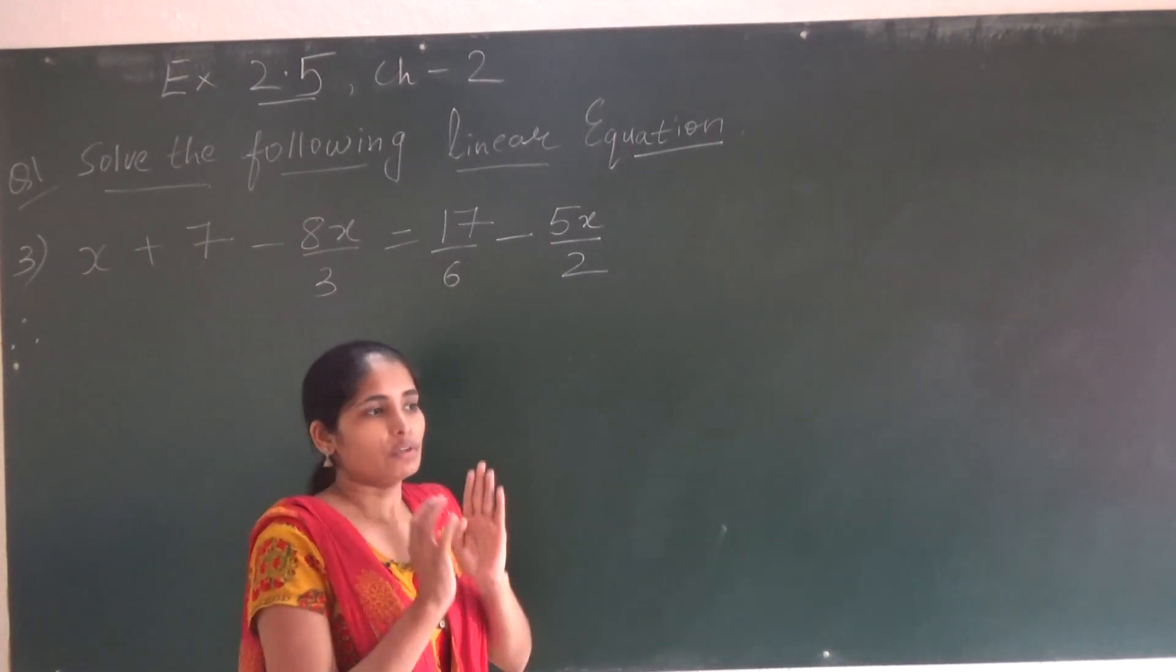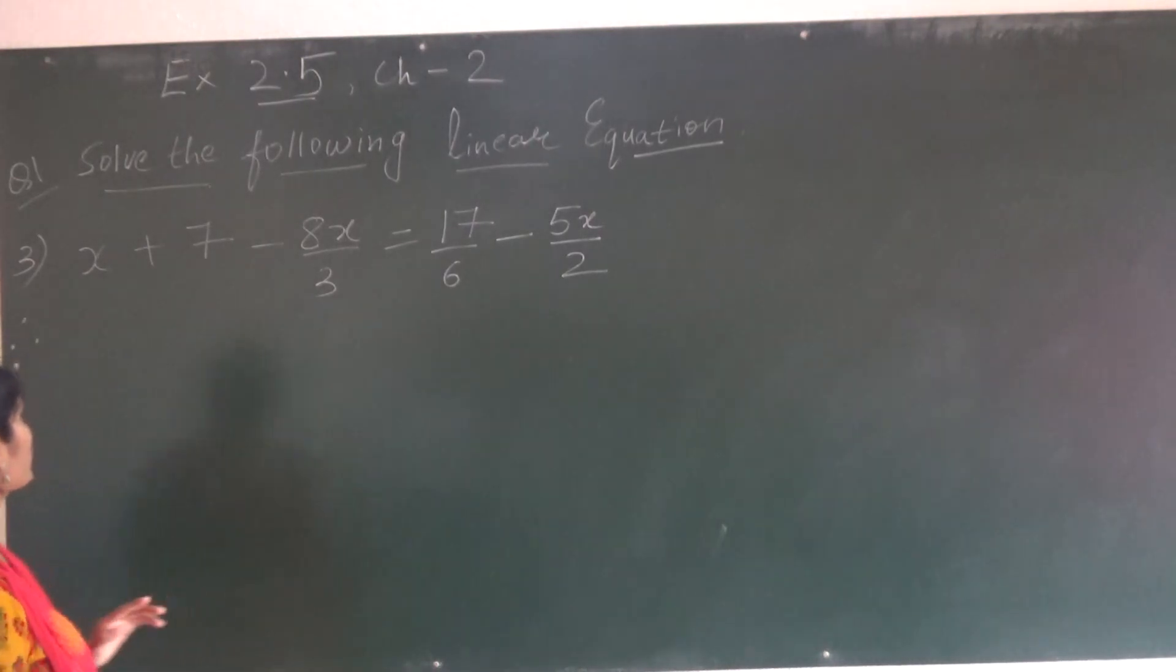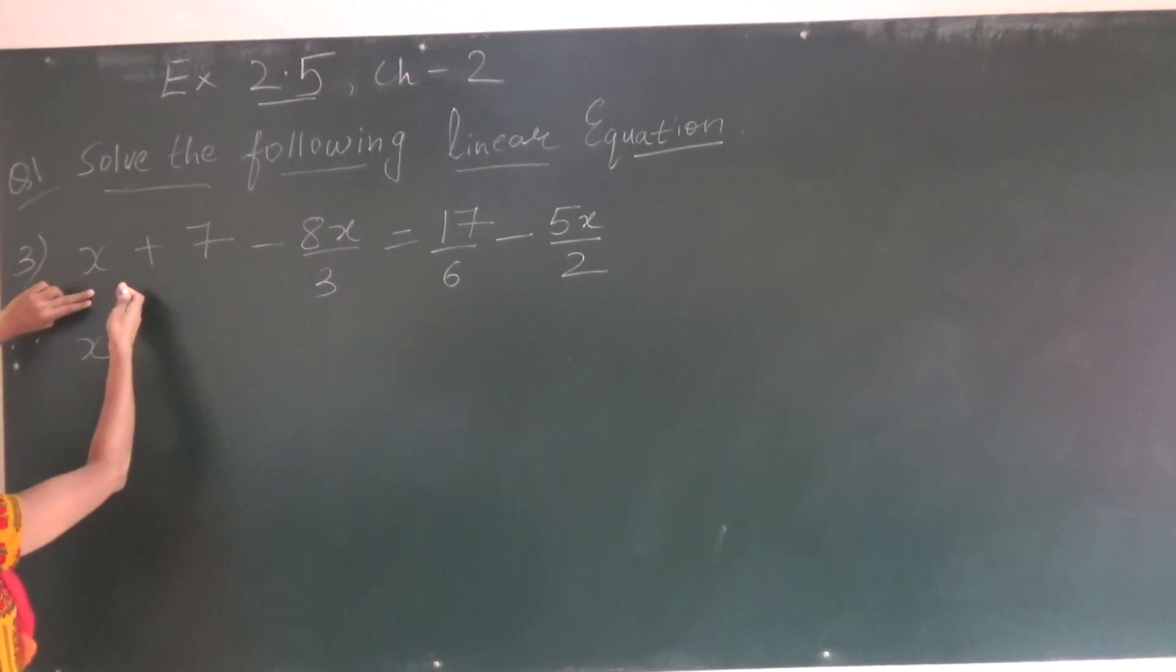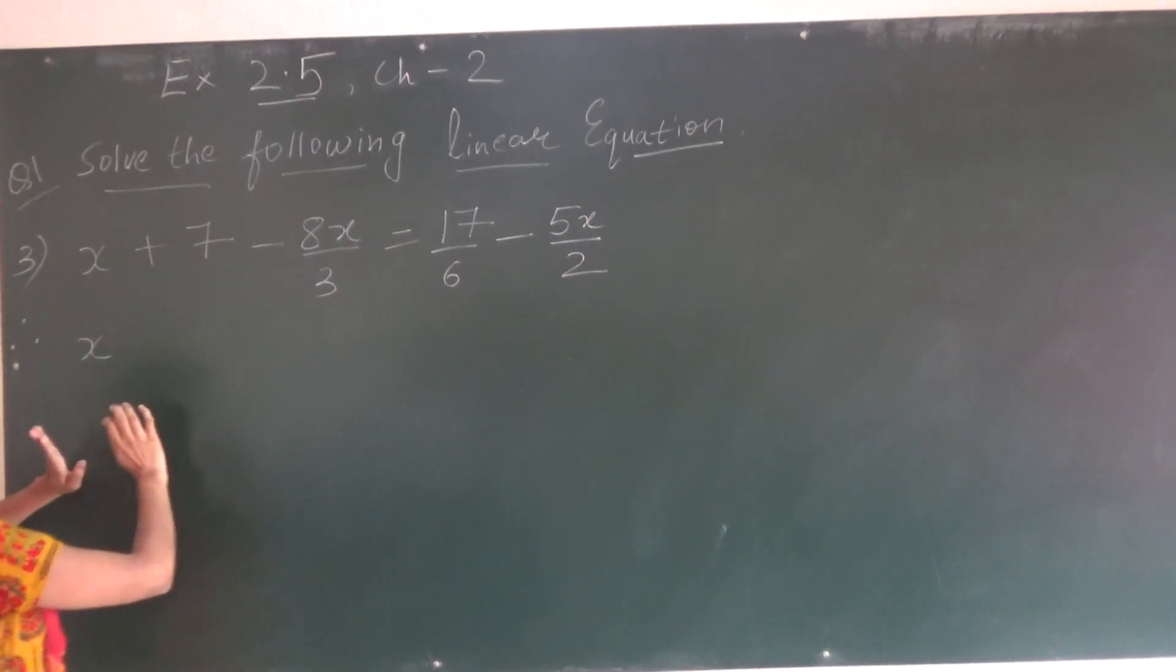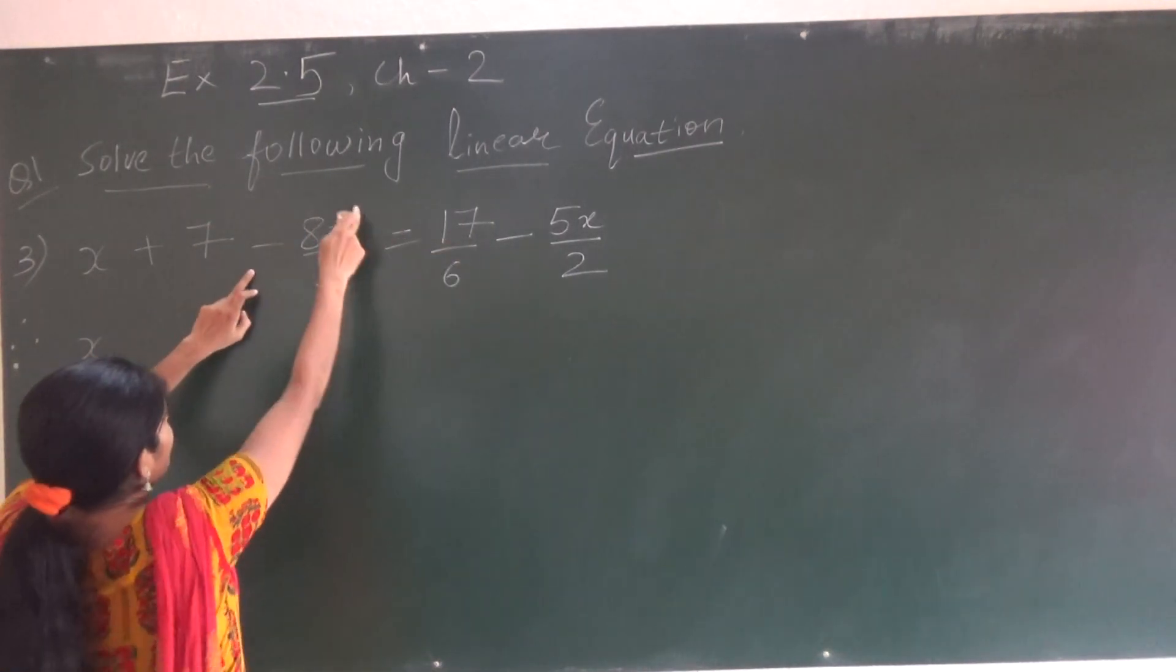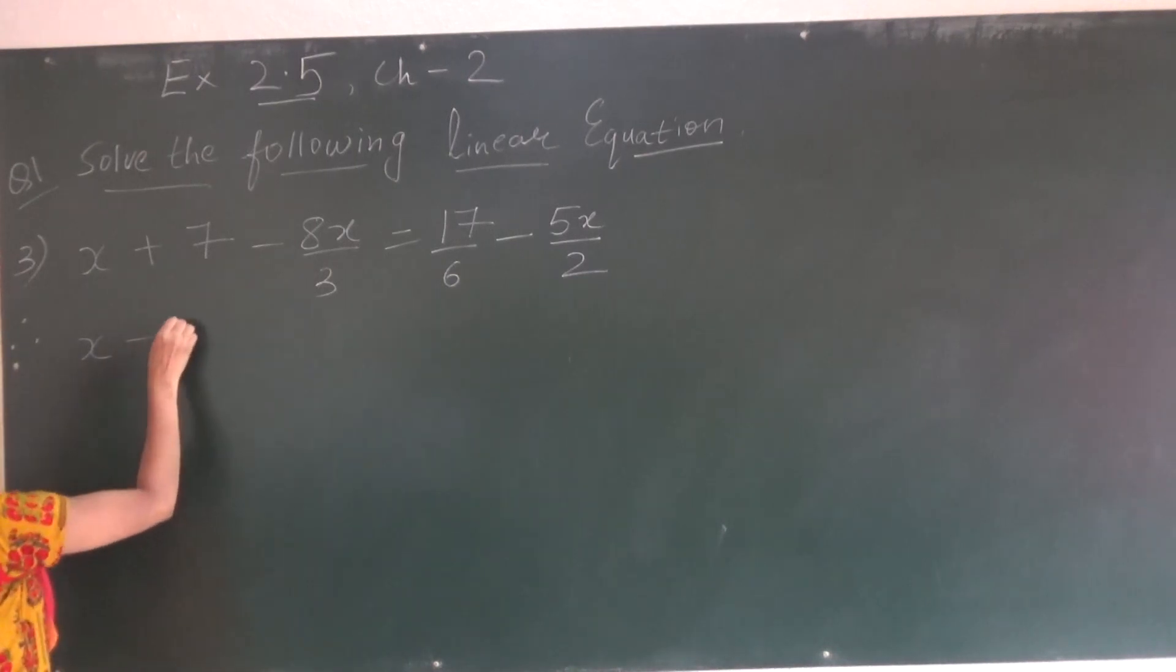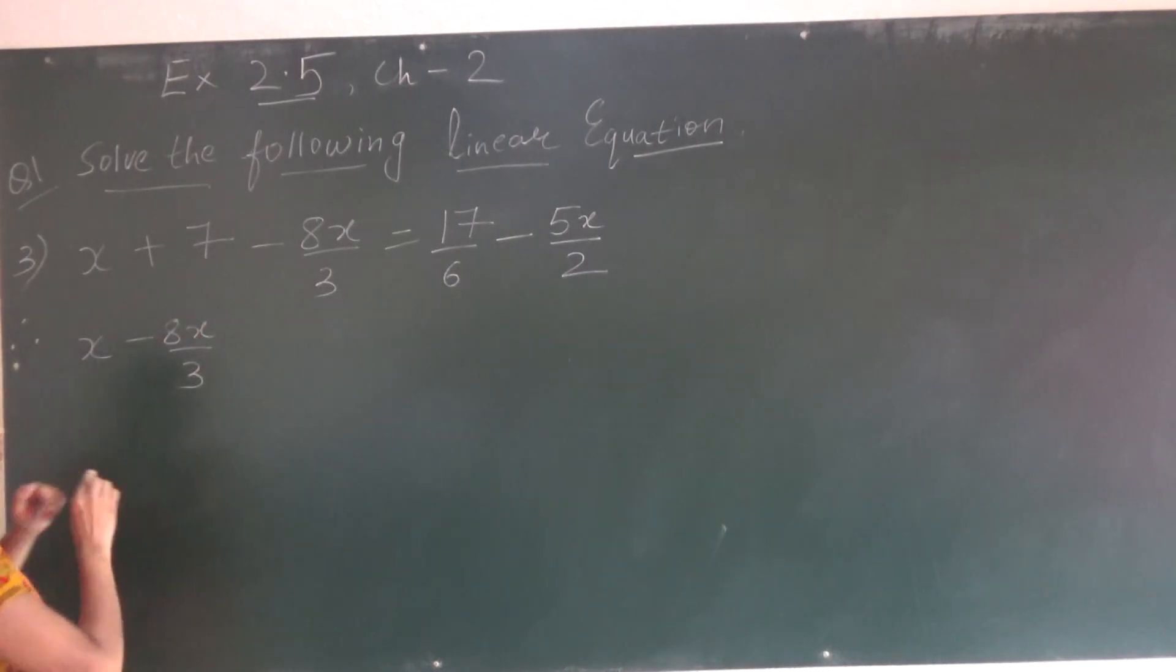First of all, we will keep all like terms together. x is given, so this is on the same side. We are keeping all the terms of x, variable term together. x already given this side, so we are keeping it same. This number part, we will take that side. Now minus 8x upon 3. It is already on this side, so minus 8x upon 3.